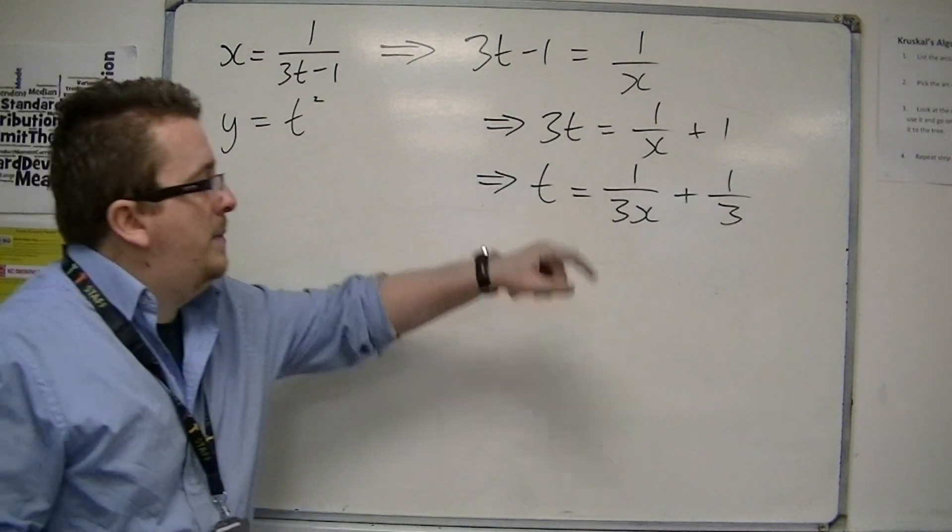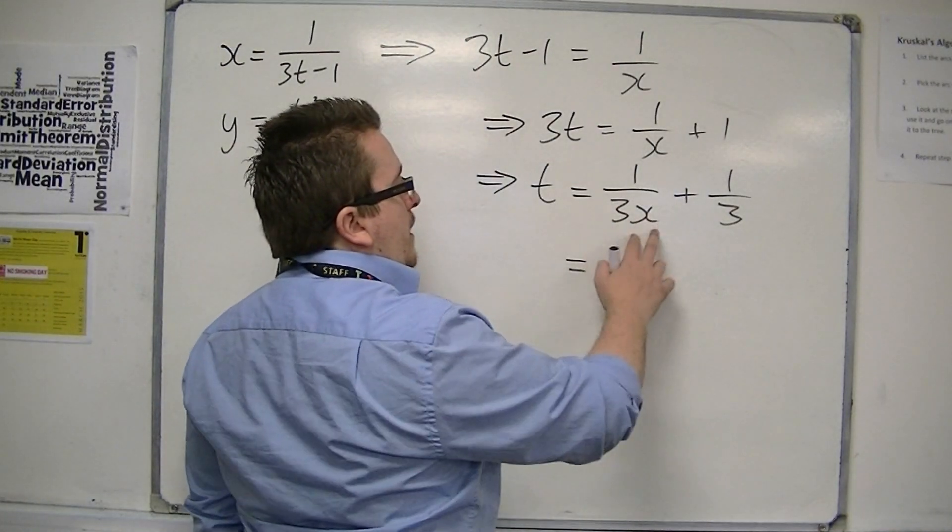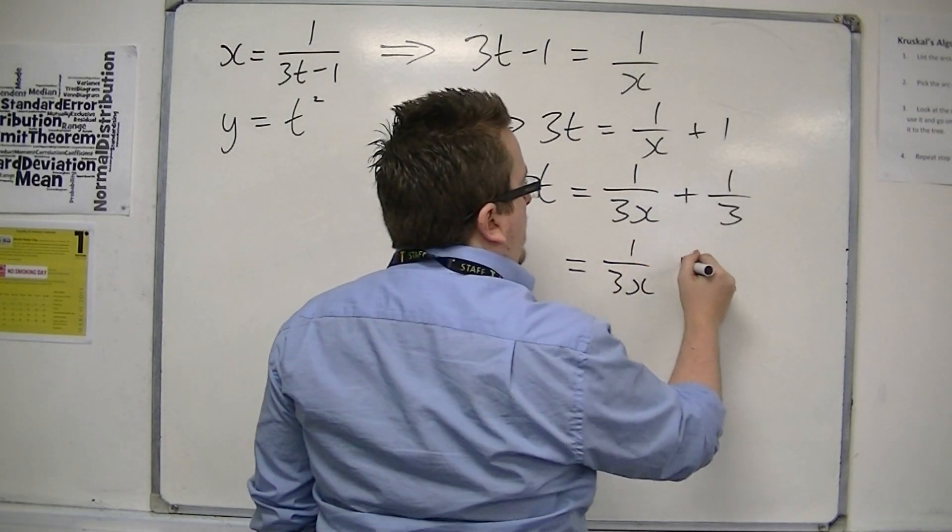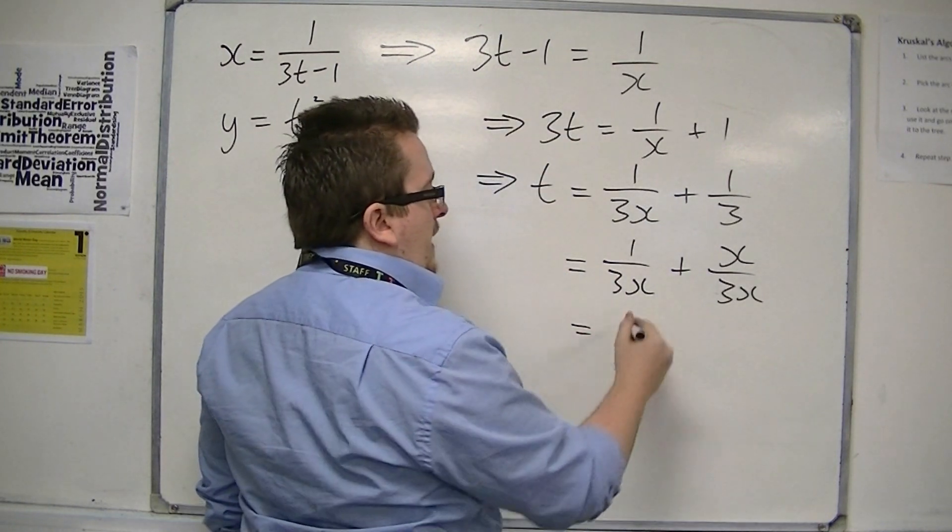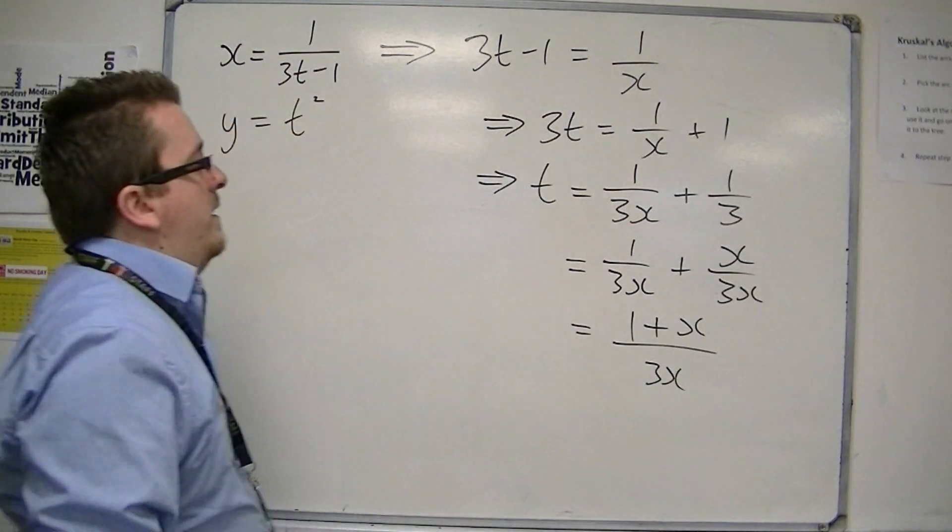Okay, so that's looking a little bit nasty at the moment. If I multiply the top and bottom by x here, I get 1 over 3x plus x over 3x. So that's 1 plus x over 3x. That's looking quite nice.